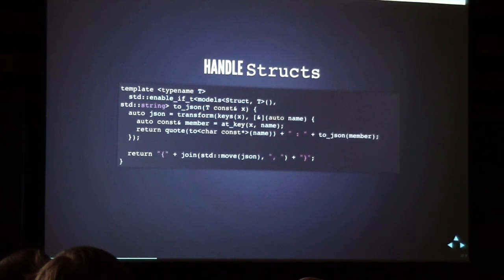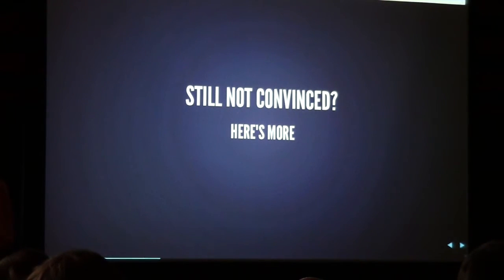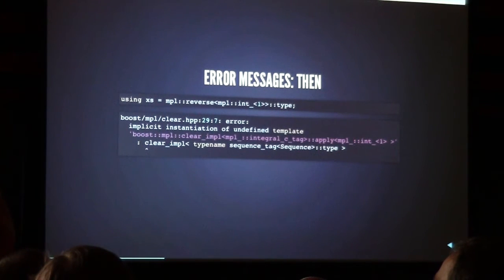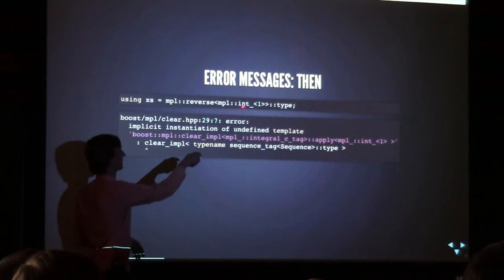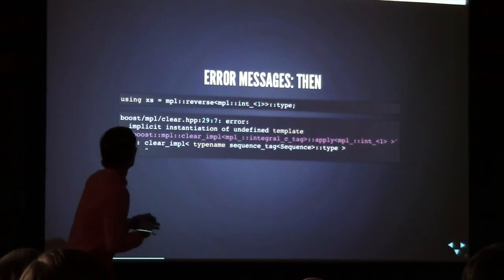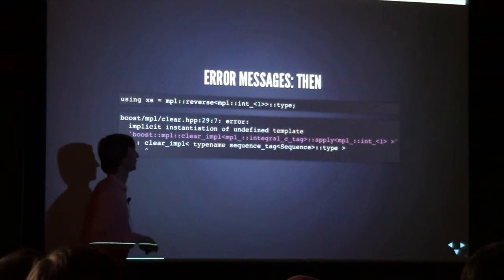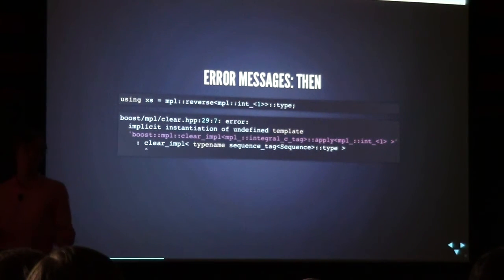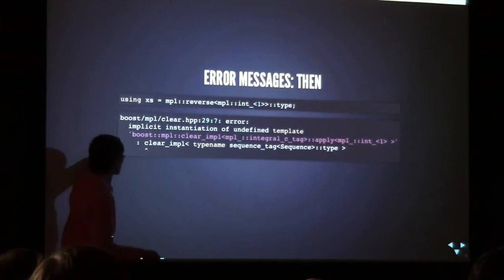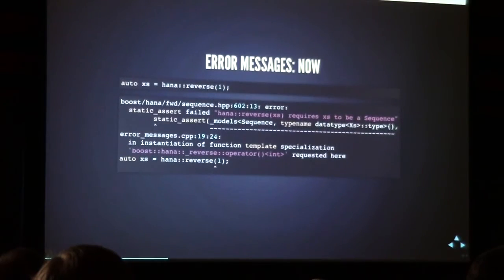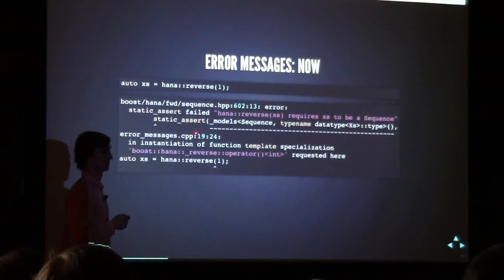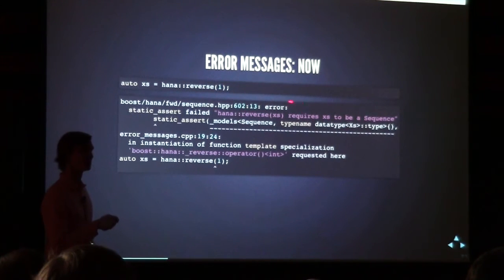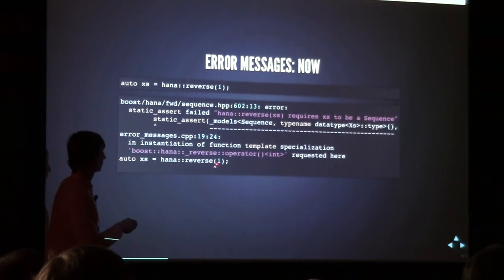Error messages. Say I want to reverse an MPL sequence, and for some reason I call it with an MPL integral constant. What happens is: 'implicit instantiation of undefined template boost::mpl::clear_input' — what the hell, right? You really have to know the MPL's implementation to understand that's your problem. There's a bunch of spew. Now, with static_assert from C++11, and by being a bit careful, you get an error message that at least gives you a hint as to what the problem is and points to the error.